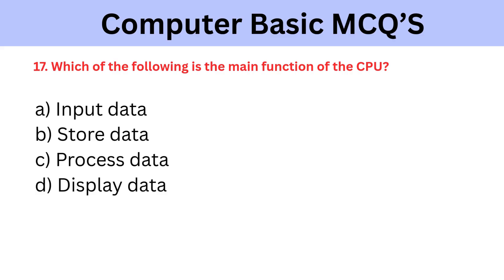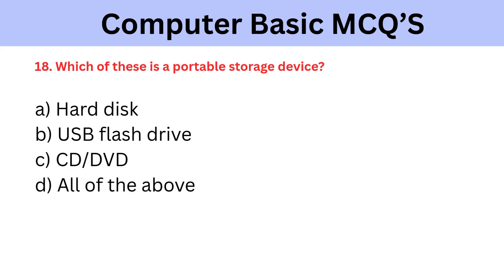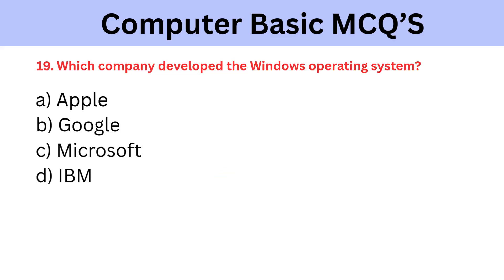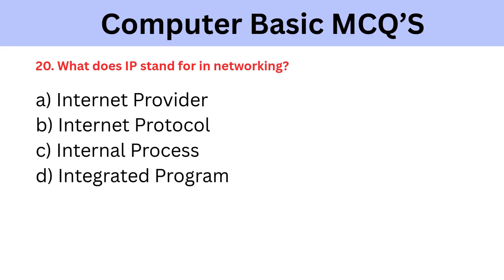Which of the following is the main function of the CPU? A) Input data, B) Store data, C) Process data, D) Display data. The correct answer is Process data. Which of these is a portable storage device? A) Hard Disk, B) USB Flash Drive, C) CD/DVD, D) All of the above. The correct answer is All of the above. Which company developed the Windows operating system? A) Apple, B) Google, C) Microsoft, D) IBM. The correct answer is Microsoft. What does IP stand for in networking? A) Internet Provider, B) Internet Protocol, C) Internal Process, D) Integrated Program. The correct answer is Internet Protocol.